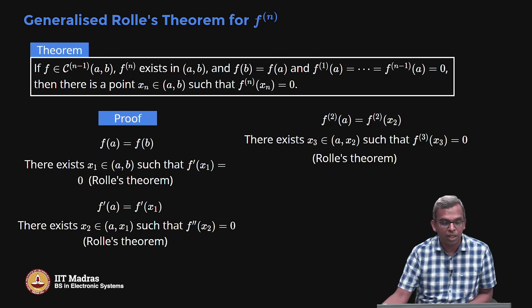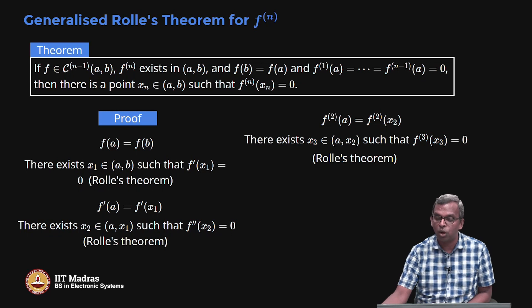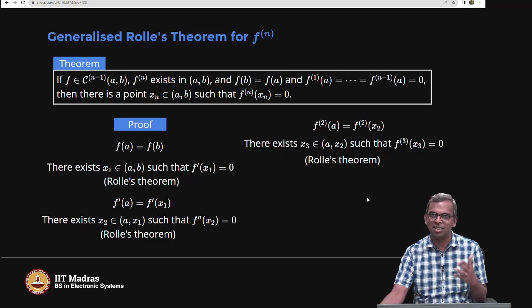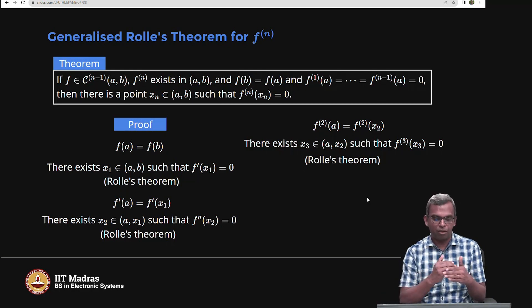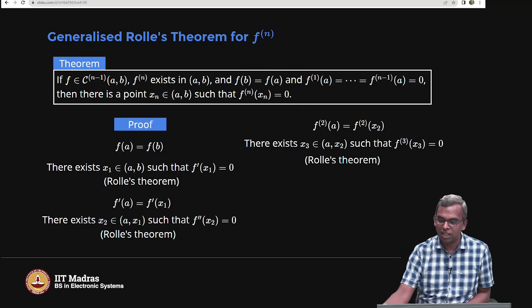I first assume F is smooth enough: it needs to be C(n-1), the (n-1)-th derivative has to be continuous, and Fn needs to exist. On top of that, F of B equals F of A, and all the derivatives from F prime to F(n-1) vanish at A. If all these conditions hold, then there is an Xn in (A,B) such that Fn of Xn equals 0.